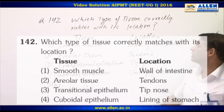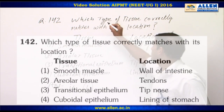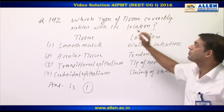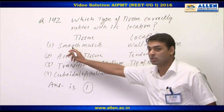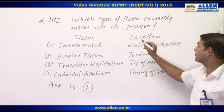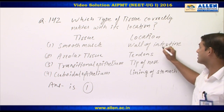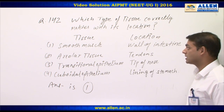Question 142: Which type of tissue correctly matches with its location? First option is smooth muscles, location: wall of intestine. Yes, it is correct.